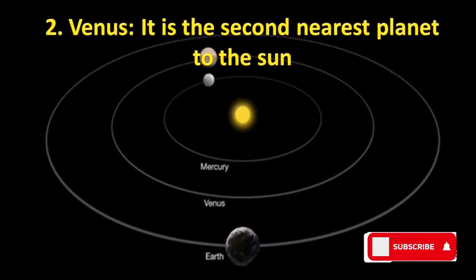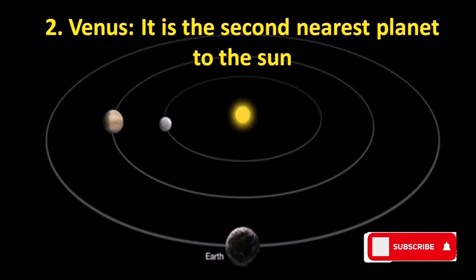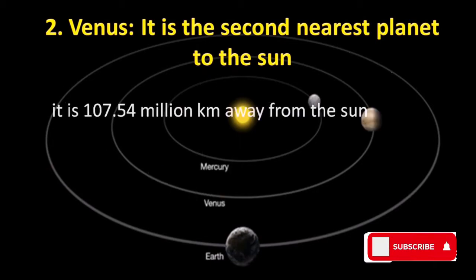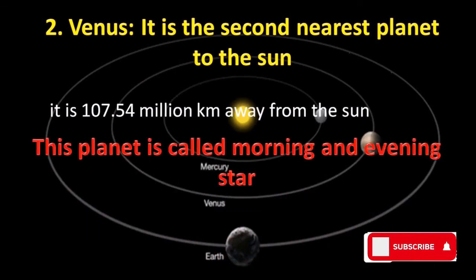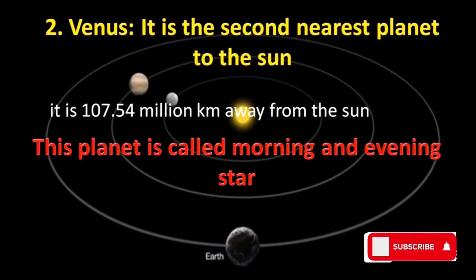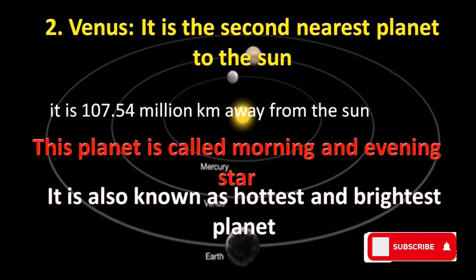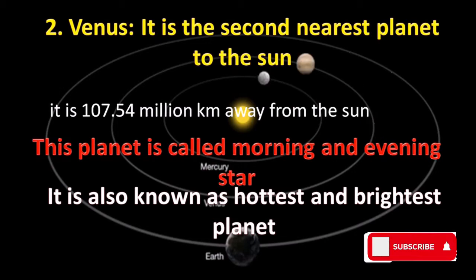The second planet is Venus. It is the second nearest planet to the sun, about 107.54 million kilometers away. This planet is called the morning and evening star. It is also known as the hottest and brightest planet due to the presence of greenhouse gases like carbon dioxide.